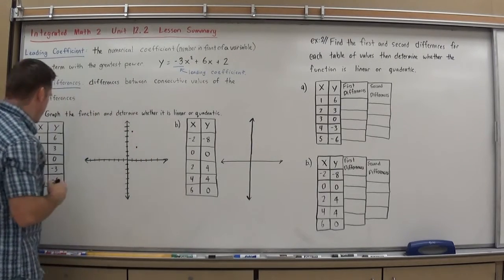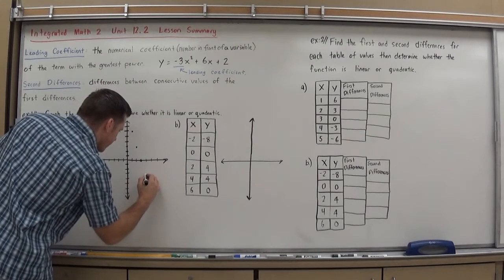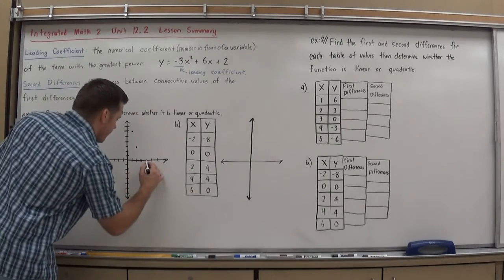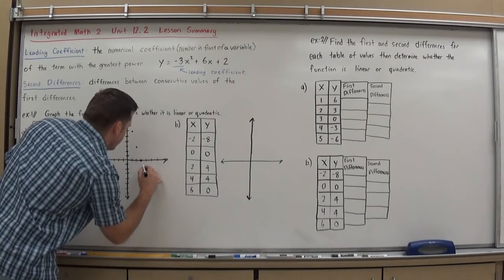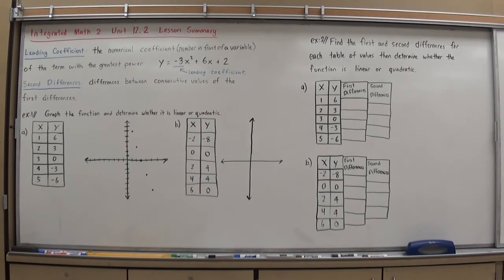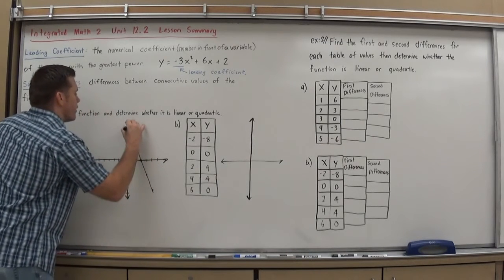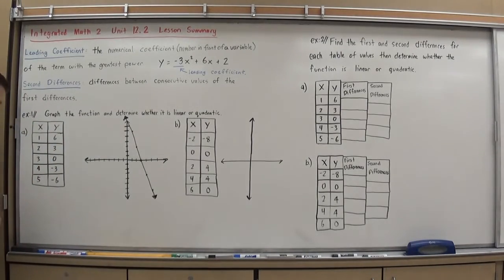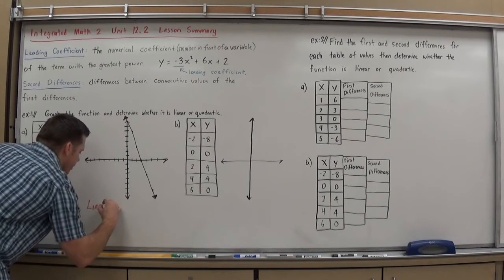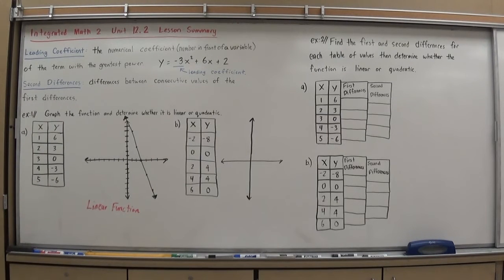Continuing: (3, 0) is right 3 with no movement up or down; (4, negative 3) is right 4 and down 3; and lastly (5, negative 6). By looking at the points, you can see the general trend. Even though the table values are discrete, I'm going to connect them into a function. It does look like it's making a straight line, so this is a linear function. Graphing is probably the easiest way to tell, but it can be the most time-consuming depending on how many points you need to plot.